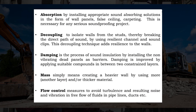The first measure is absorption: by installing appropriate sound-absorbing solutions in the form of wall panels, hull ceilings, and carpeting. This is necessary for any serious soundproofing project. The second is decoupling: to isolate walls from the studs, thereby breaking the direct path of sound, by using resilient channels and sound clips, adding resilience to the wall.